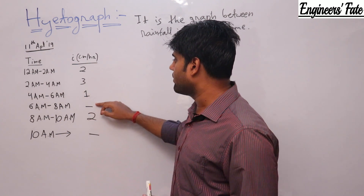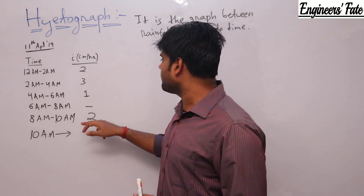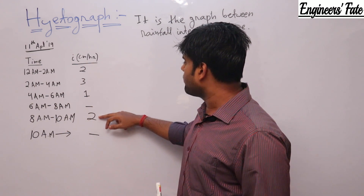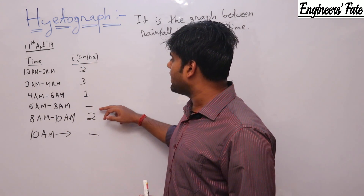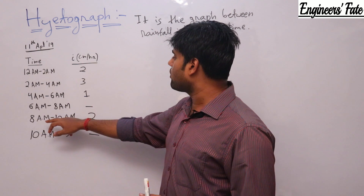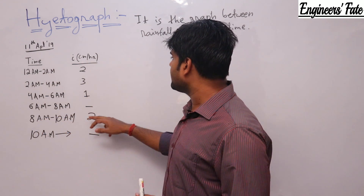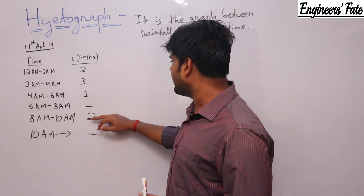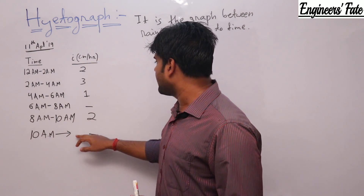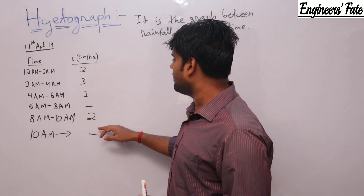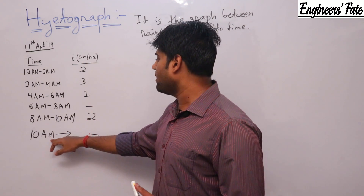From 8 am to 10 am the intensity value is 2 cm/hr, meaning rainfall started again at 8 am and ended at 10 am, because from 10 am onwards no intensity value is given — the rain has stopped.